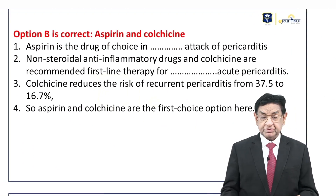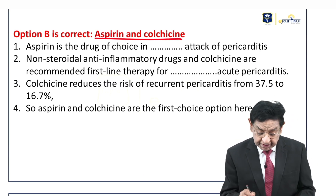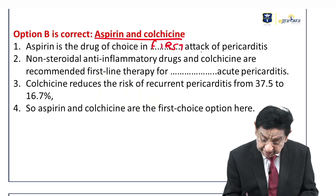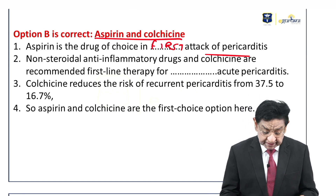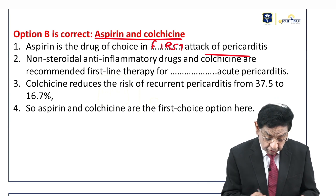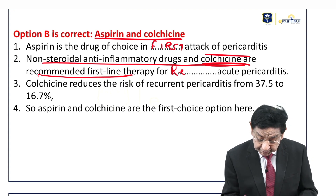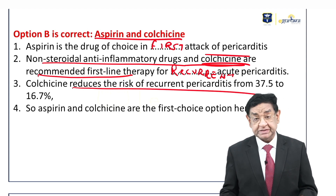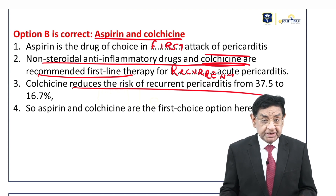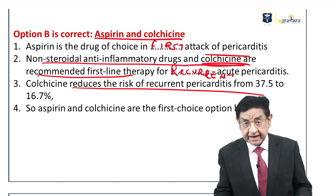Now we come to answer this question. The answer is we have to give aspirin and colchicine together. Aspirin is the drug of choice for the first attack of pericarditis. But as the question says, the patient had an attack six months back also, so it is a type of recurrent attack. NSAIDs and colchicine are recommended as first-line therapy for recurrent acute pericarditis. Colchicine reduces the risk of recurrent pericarditis from 37% to 16.7%, making it a really good drug for reducing recurrent attacks.